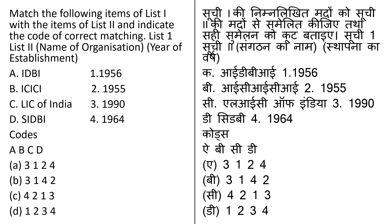In this question, List 1 and List 2 are given and you have to match List 1 with List 2. In List 1, the names of organizations or banks are given, and in List 2, the year of establishment is given. List 1 contains IDBI, ICICI, LIC of India, and CIDB. To answer this question, you have to know about each organization and when it was established.